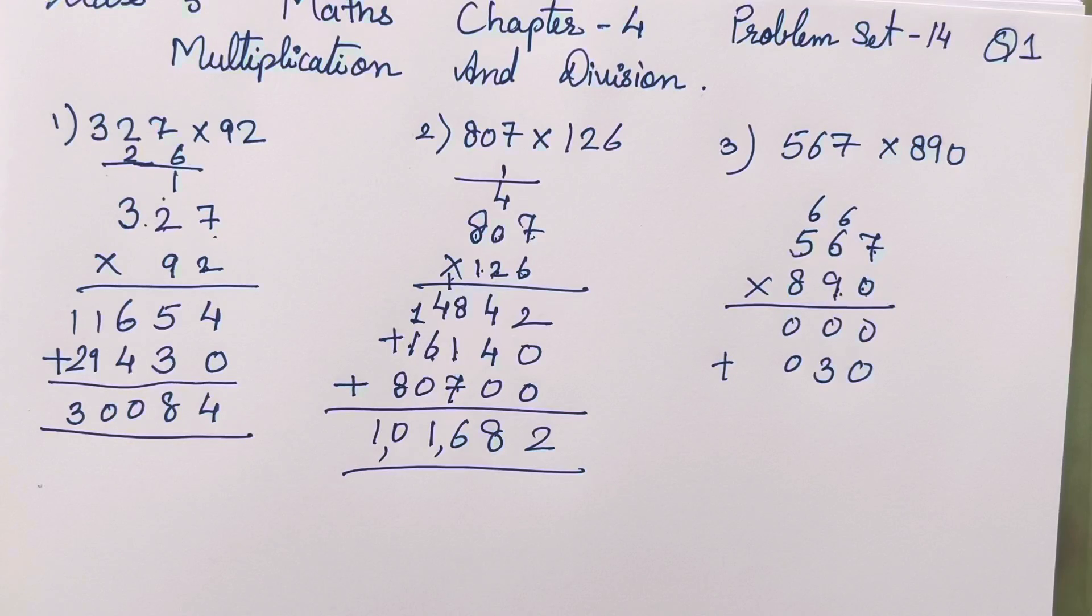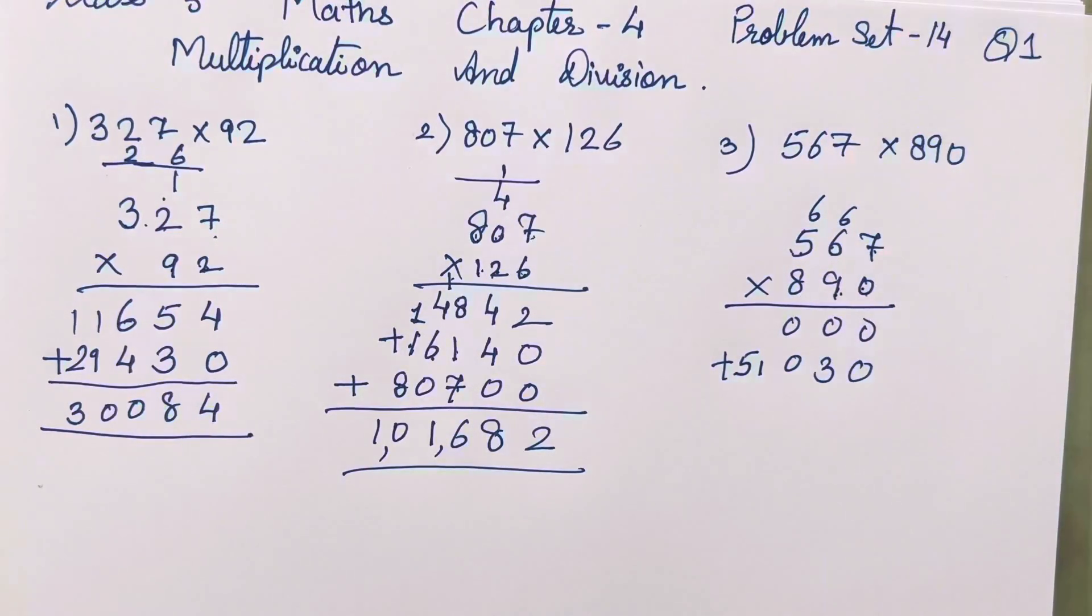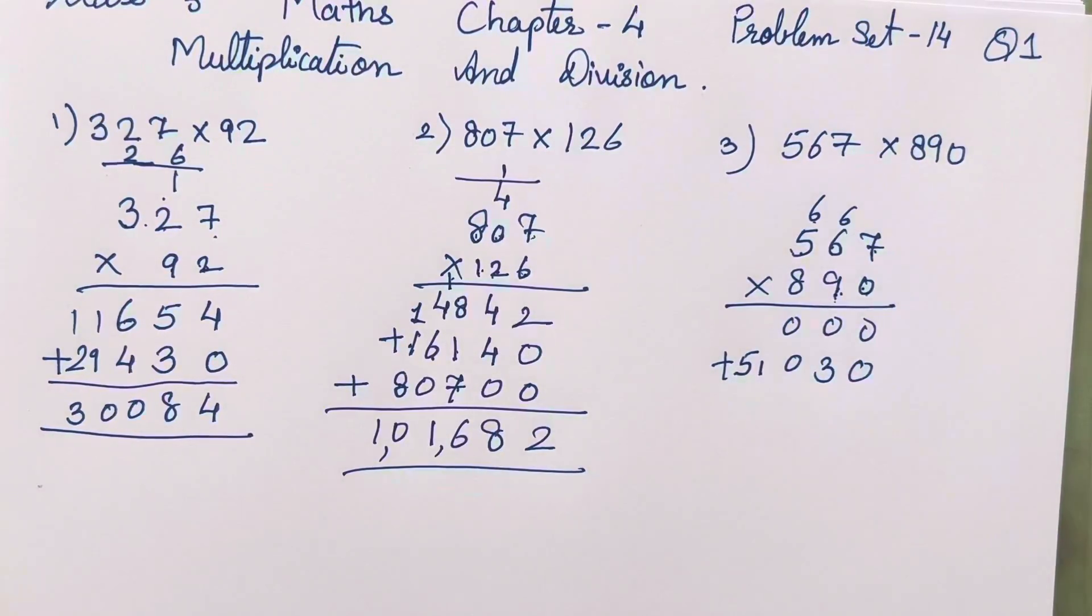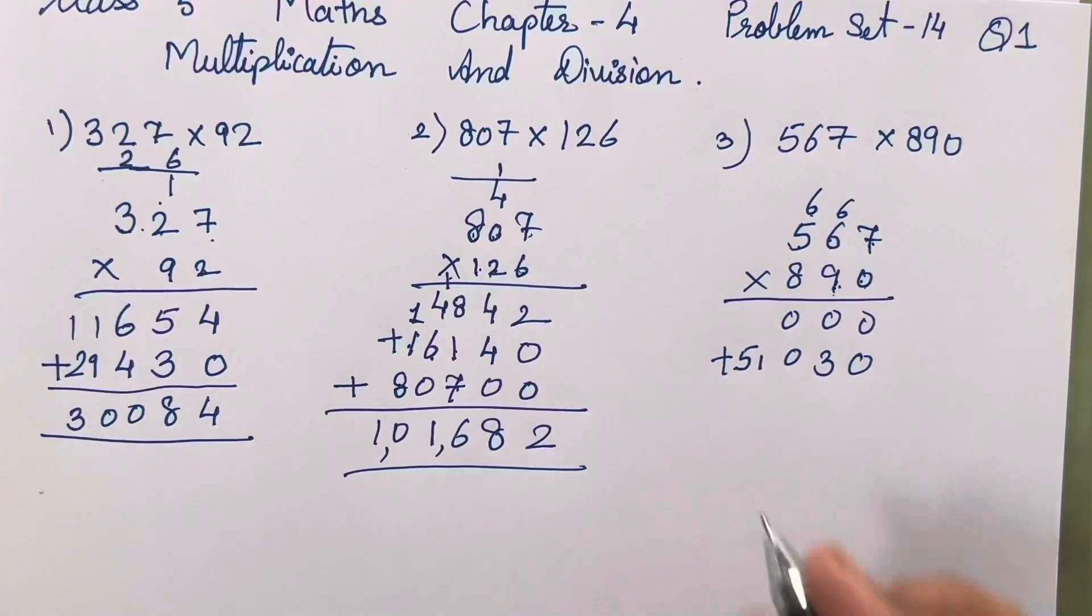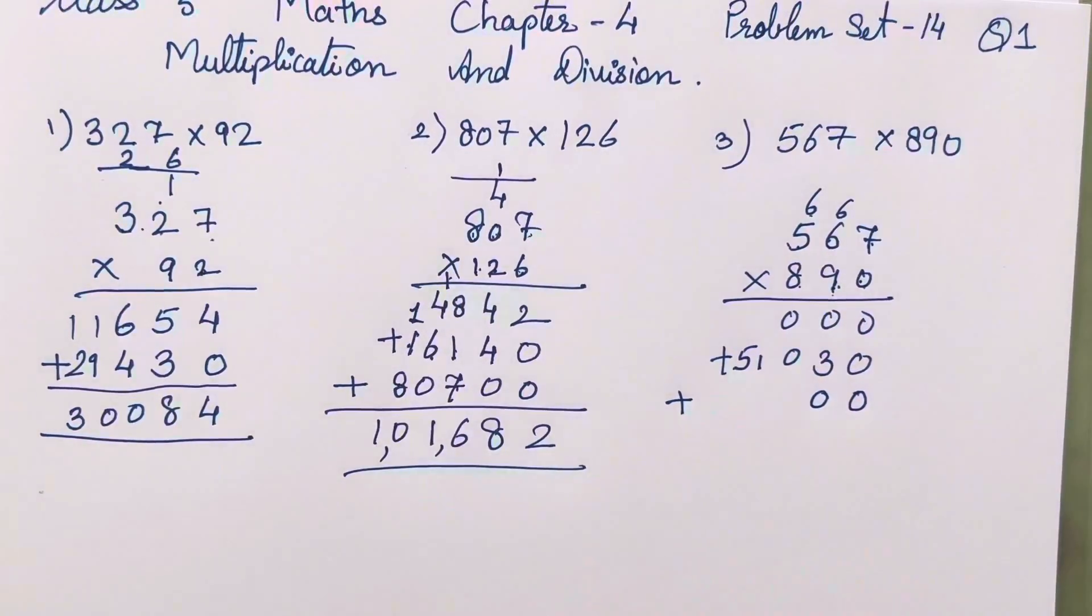So 5 nines are 45, 46, 47, 48, 49, 50, 51. Let me check this. 5 nines are 45, 45 plus 6 is going to give you 51.